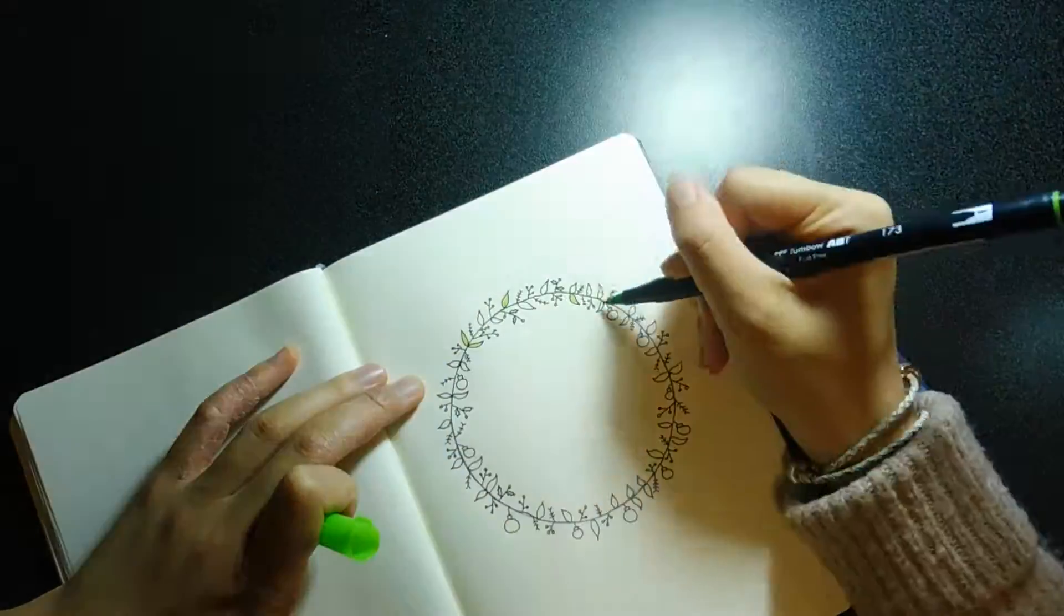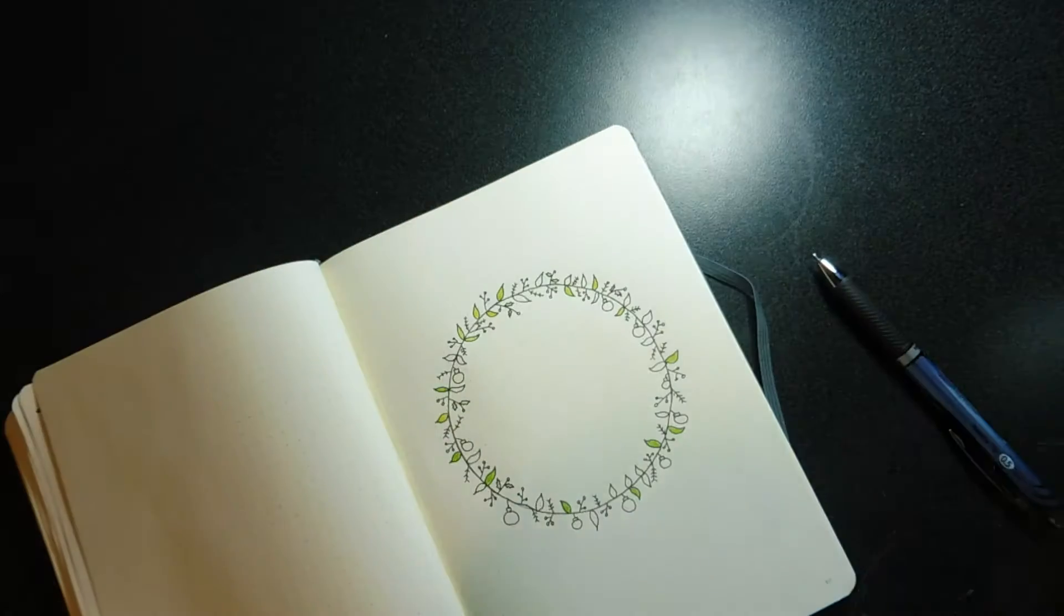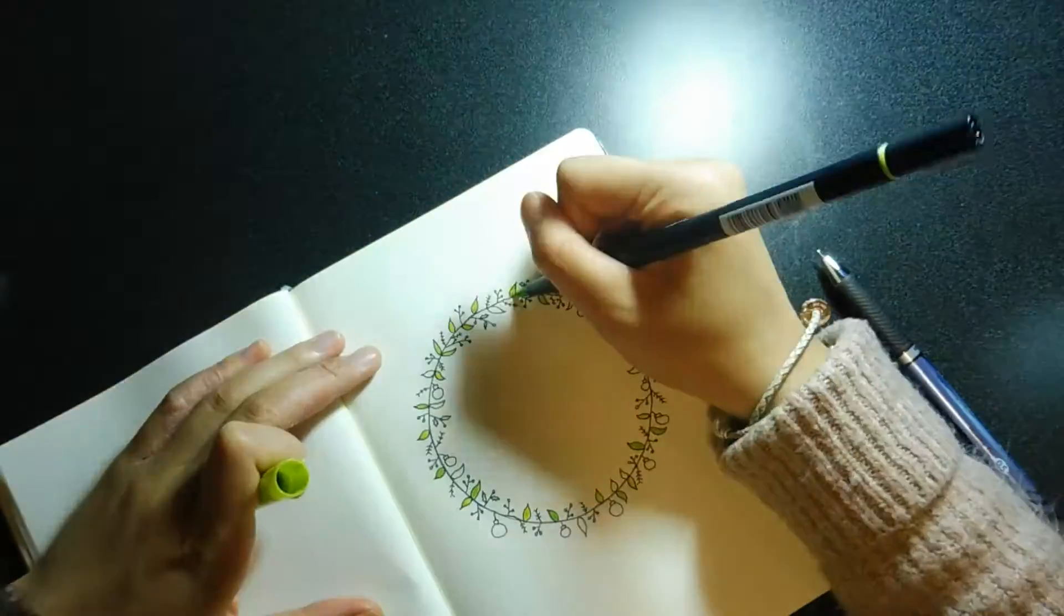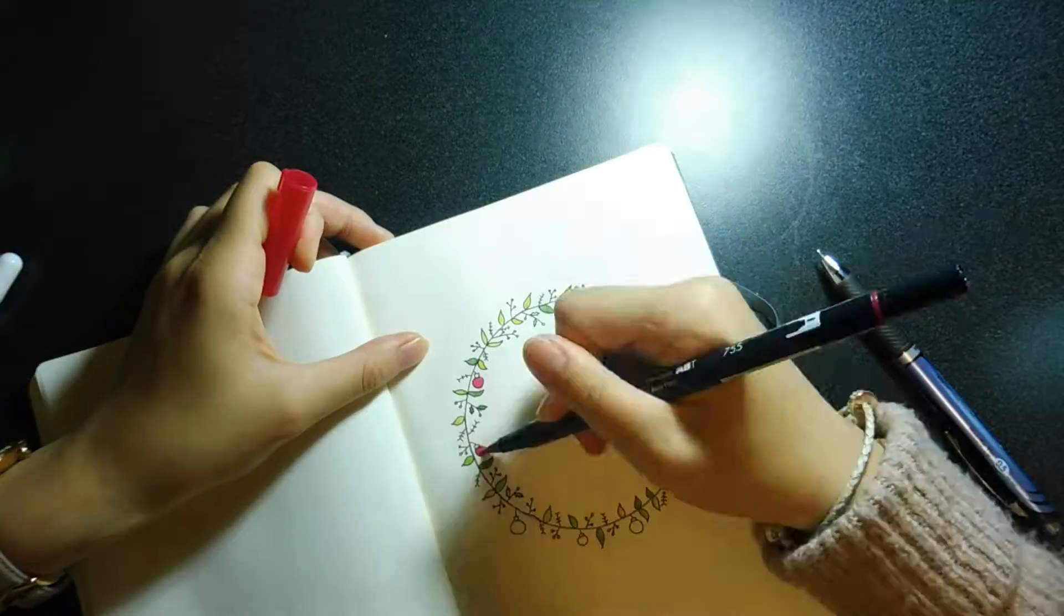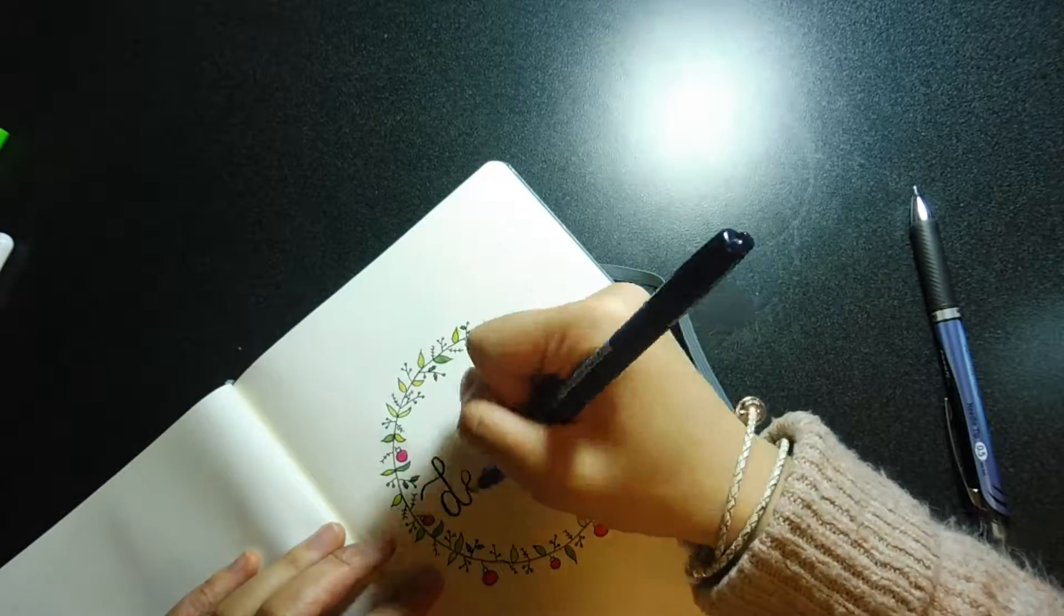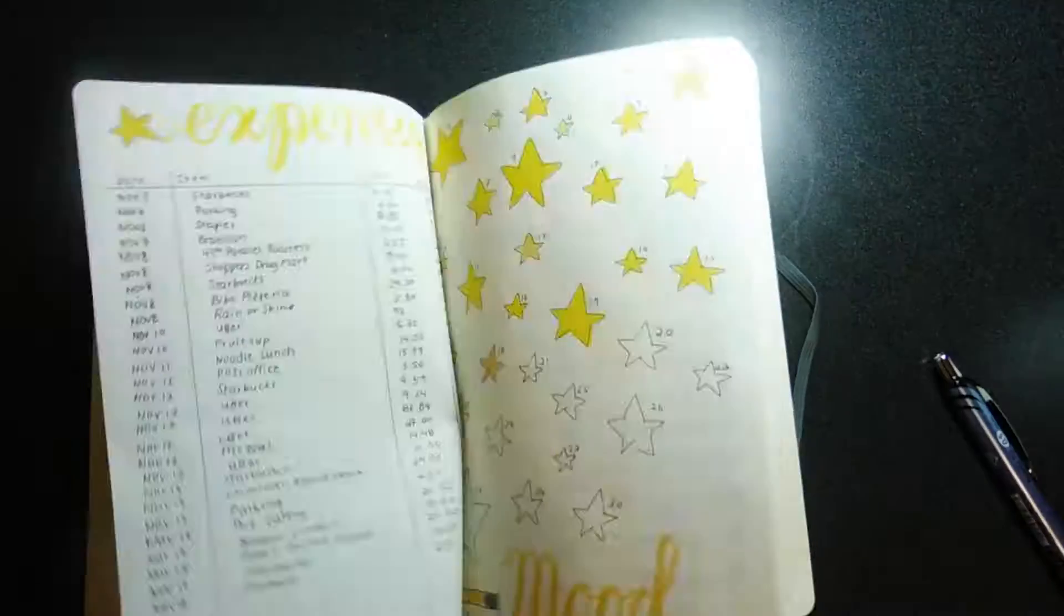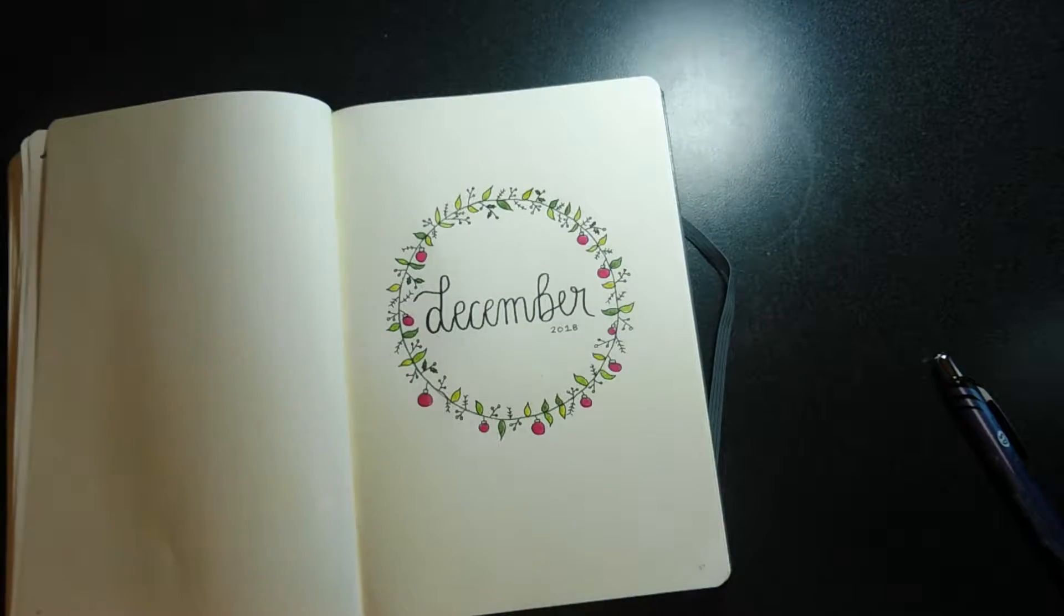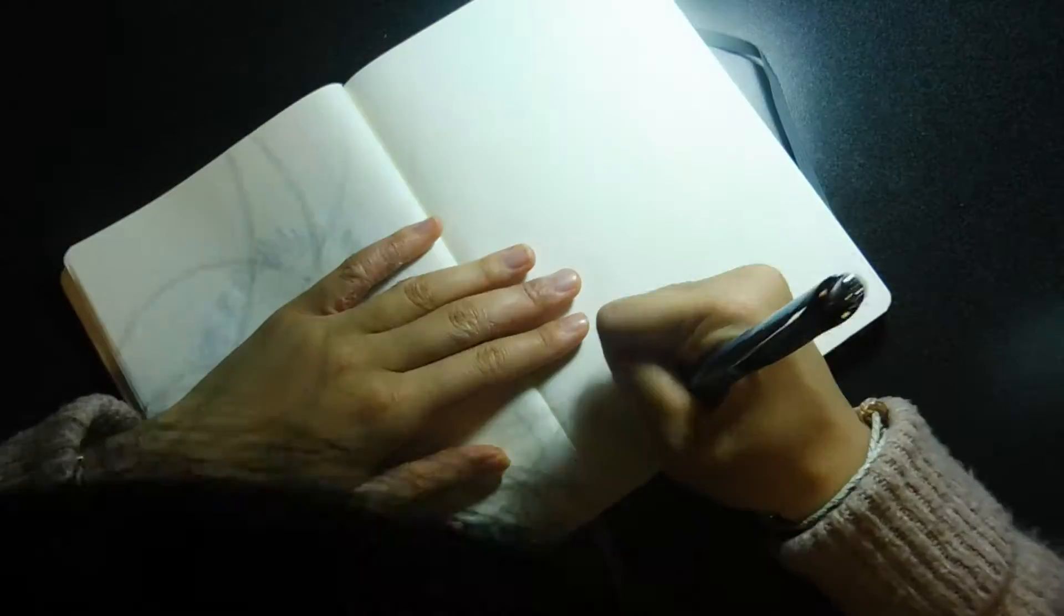I started with my title page for December. I used a cup to trace the circle shape to make a wreath kind of looking thing for December. I use my Tombow Fudenosuke pen to write December in the middle of the circle, and then I kind of flip back to my November spread to see what I did because I just don't remember all the pages. Then I moved on to my monthly layout.